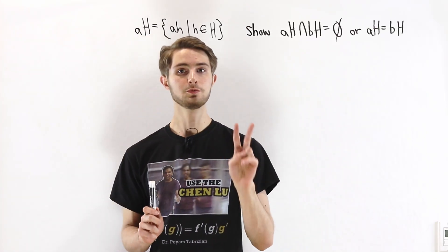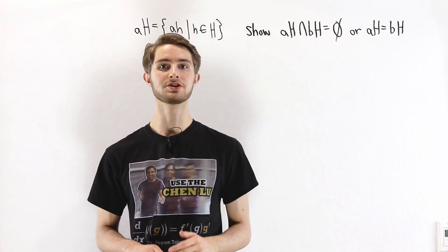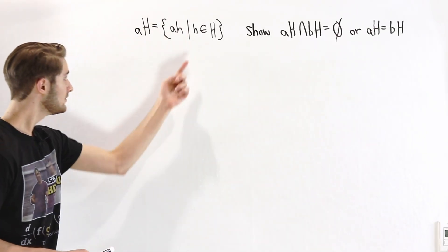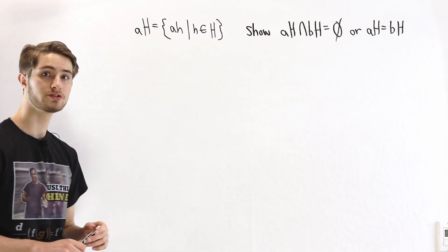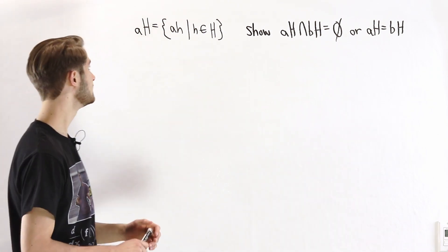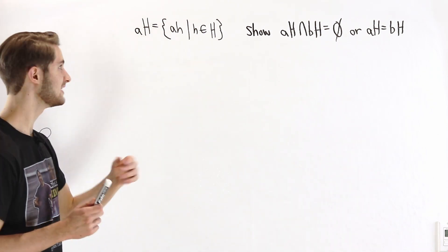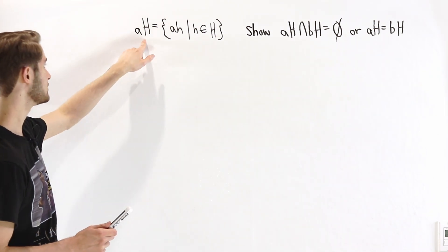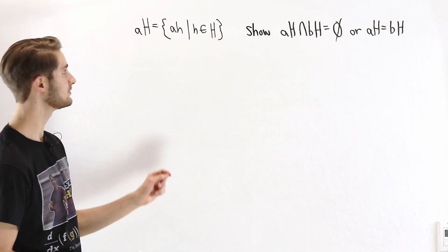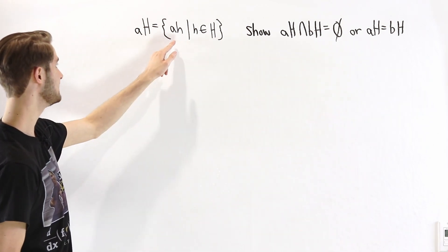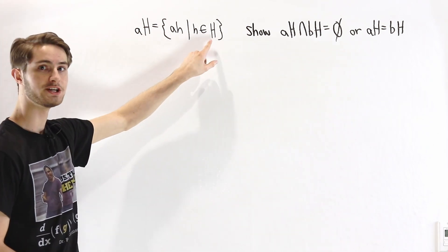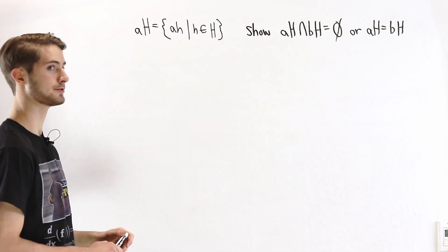We are going to prove two basic properties of cosets. Suppose that H is a subgroup of some group G. Then a coset aH is equal to the set of elements of the form a times h, for every h in that subgroup.